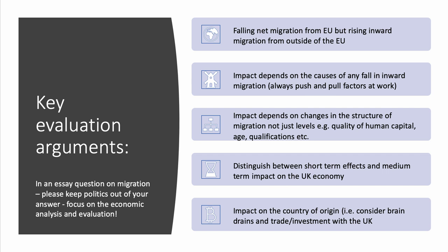Consider who's leaving the UK and the impact on the quality of human capital — the age, qualifications, and experience of people who are leaving. It's also important to distinguish between short-term and medium-term effects on the UK economy. Think about the longer-term impact too, and also the impact on the country of origin. If there's a fall in net migration from, say, Poland, the Baltic states, Slovakia, or Slovenia, what are the consequences for those countries? Are people going back, or choosing somewhere else to live and work? Consider brain drains, reverse brain drains, and possible effects on trade and investment with the UK.